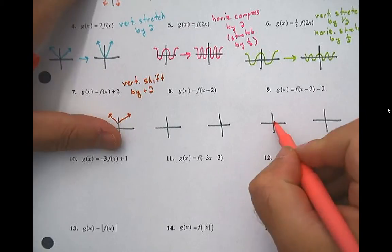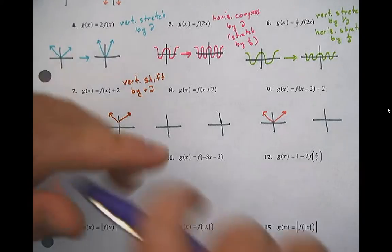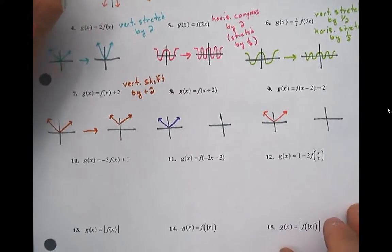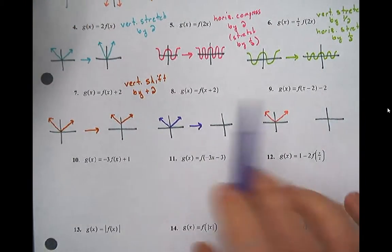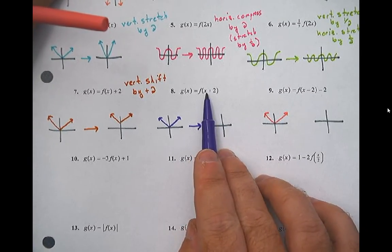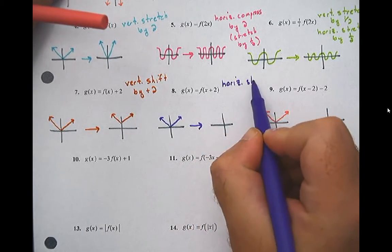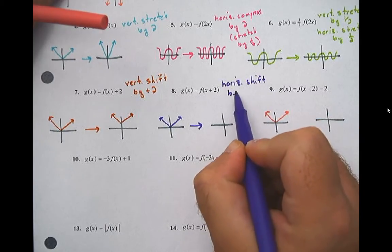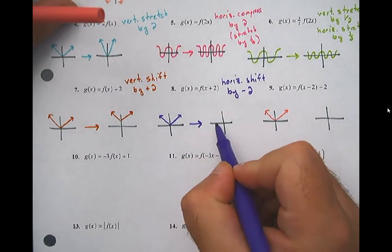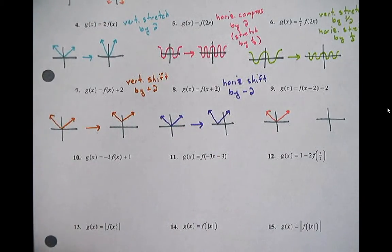I'm going to do absolute value for both of these. I'm attaching a plus two to the x, so that's going to be a translation — it's a shift. But it's going to affect x, so it's going to be a horizontal shift by negative two. Remember, the x does the opposite of what you would think. So that's going to shift our graph horizontally back two spots — it's not going to change the width at all, it's going to shift it backwards.